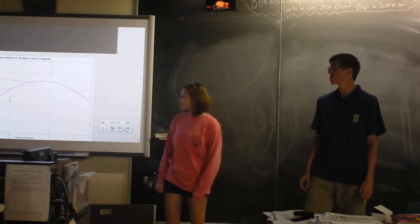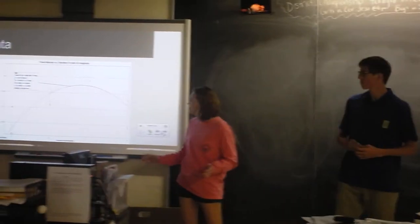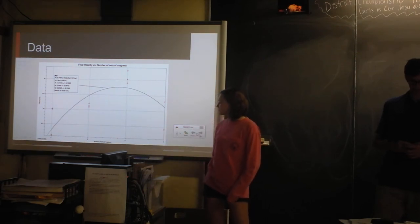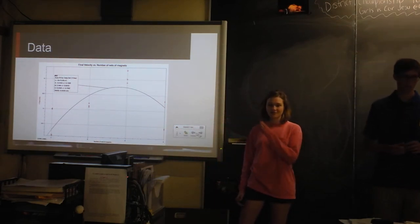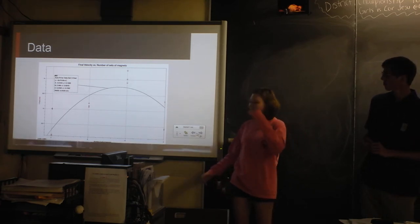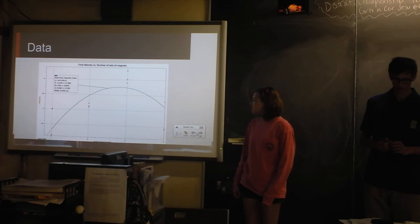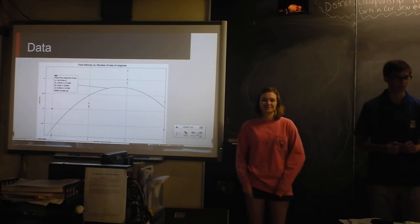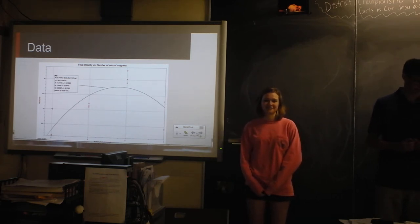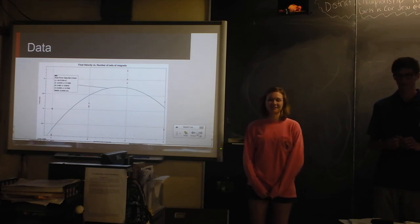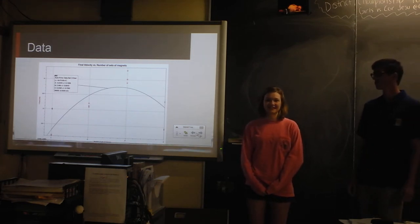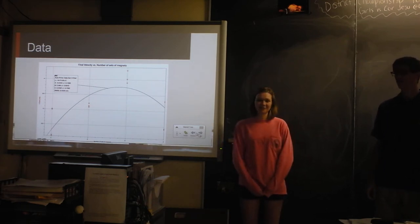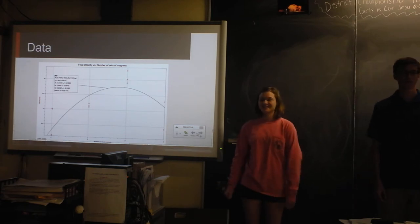And then this one was really interesting. It was the final velocity versus the number of sets of magnets. We thought that as we increased the number of sets of magnets, the final velocity would just steadily increase. But in fact it increased and then started to decrease again. We looked online and everything for why this was happening. And we found some stuff through magnetism and what Gauss discovered, but we didn't really know how to go about it because a lot of the things we hadn't studied yet. That's something that we would like to go into and study more if we had that knowledge.